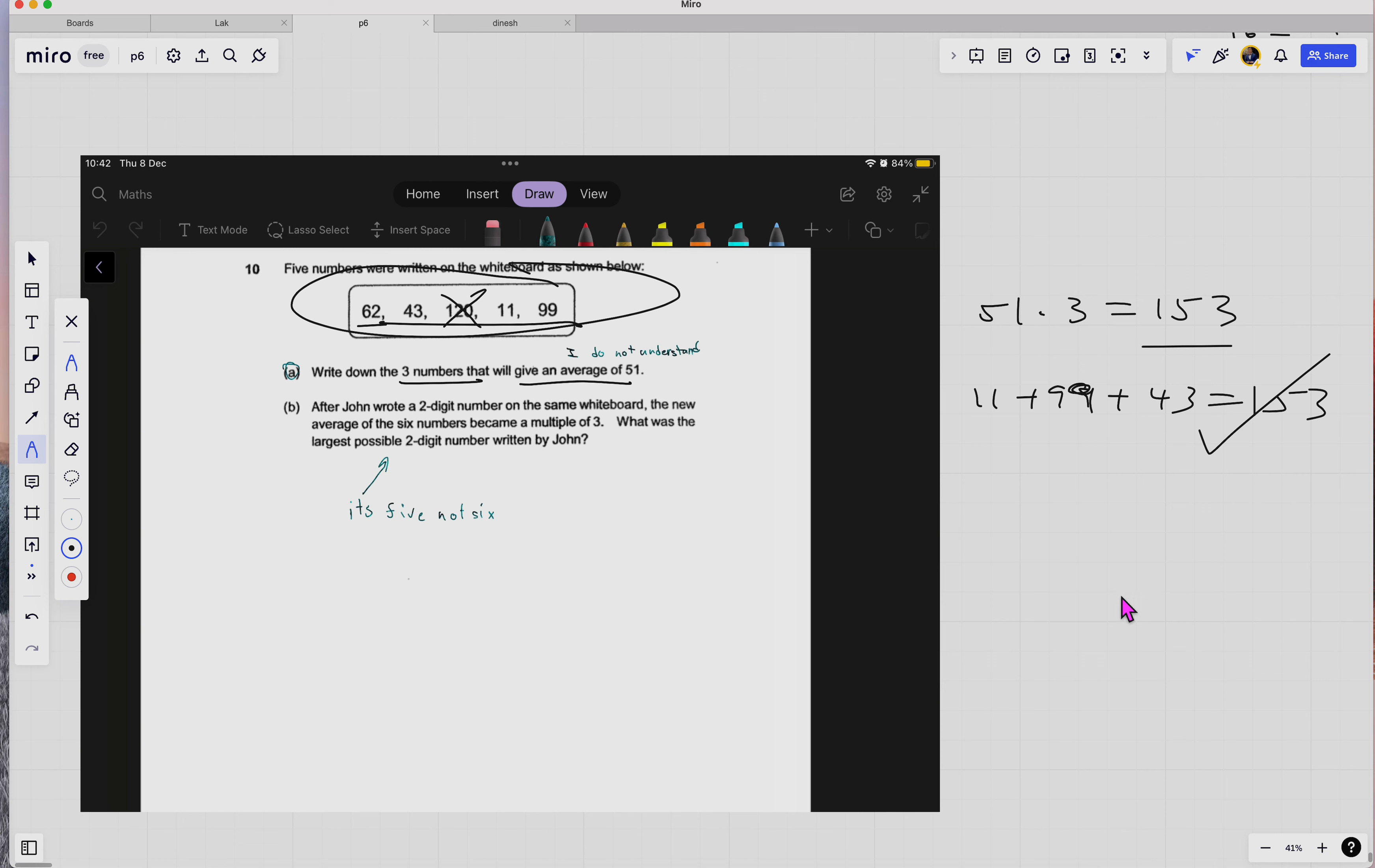Then what about B? Yeah, problem with B. So after John wrote a two-digit number on the same whiteboard, another two-digit number will be added to these five numbers. So you have X. It's two-digit.